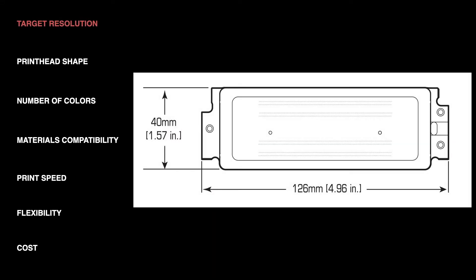We're going to start with the target resolution that your application calls for. Each printhead on the market has a native resolution that's specified by the manufacturer. It's measured in DPI or dots per inch, sometimes NPI, nozzles per inch. Most printheads on the market for industrial inkjet fall in the range of somewhere from 300 to 1200 DPI.